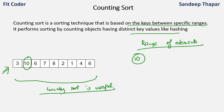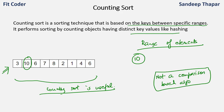Counting sort is not a comparison-based algorithm. Bubble sort, selection sort, and insertion sort are comparison-based algorithms, but counting sort is not. It performs sorting by counting the objects which have distinct values, then does some arithmetic operations on them to sort the array.